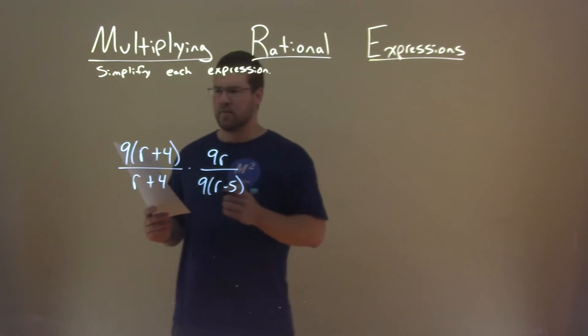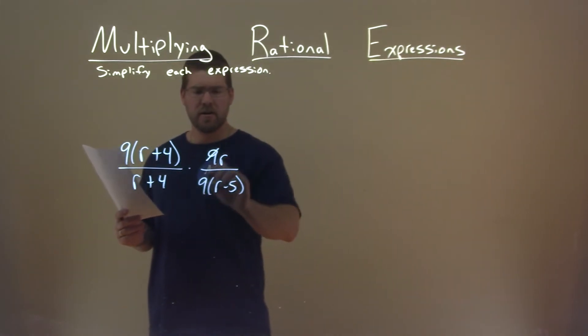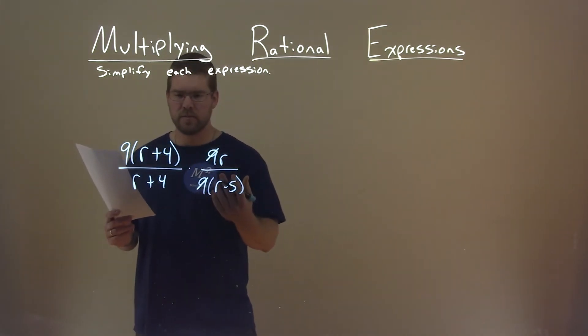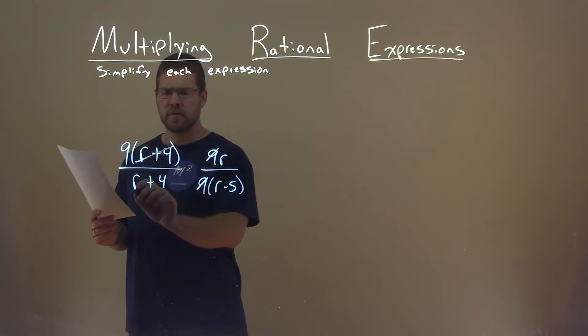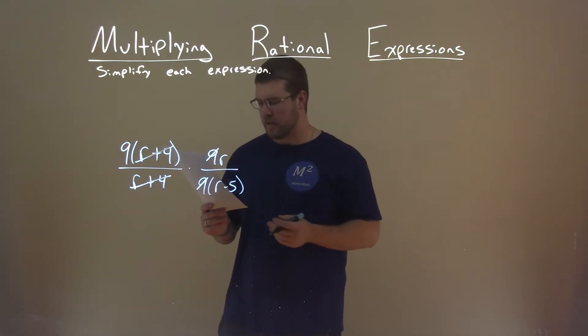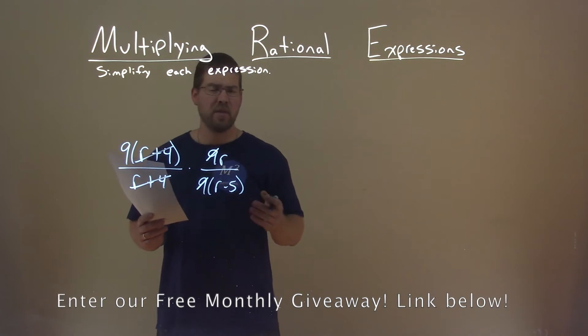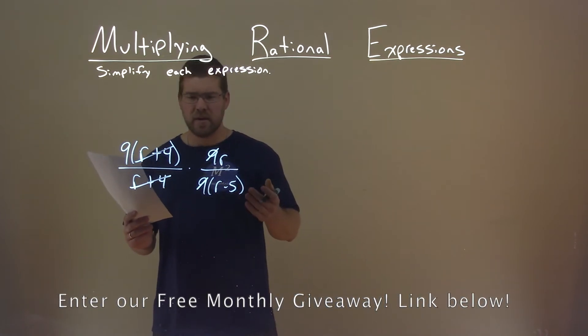Well, I'm looking for things to cancel out. There's a 9 here and a 9 here, that cancels. And I see an r plus 4 and an r plus 4 in the numerator and denominator. They can cancel out. Other than that, I don't really see anything else that can cancel.